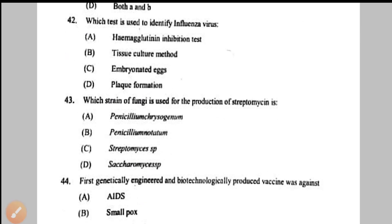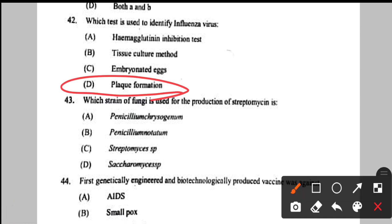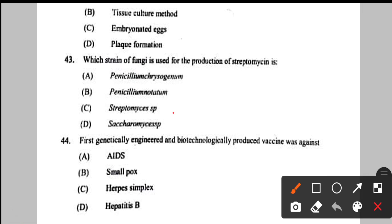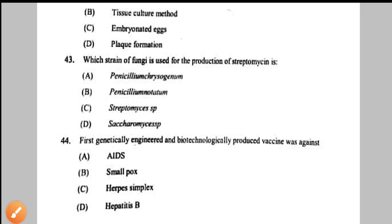Question number 42: test used to identify influenza virus — we use viral culture test and look for flake formation — option D. Question number 43: which strain of fungi is used for the production of streptomycin? Streptomyces griseus is used for production of streptomycin — option C.